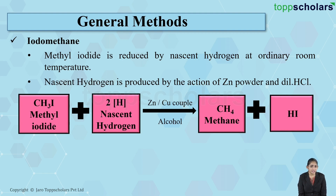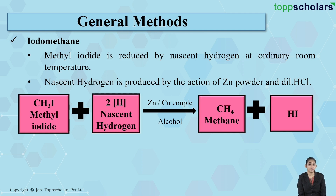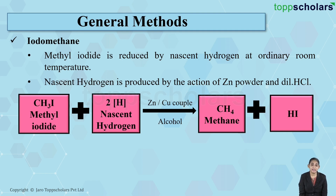As you can see, there is something written over the arrow — zinc or copper couple and alcohol — which means this reaction takes place in the presence of zinc or copper couple and alcohol. So, we took methyl iodide and reacted it with nascent hydrogen, and nascent hydrogen reduced methyl iodide into methane, as you can see.